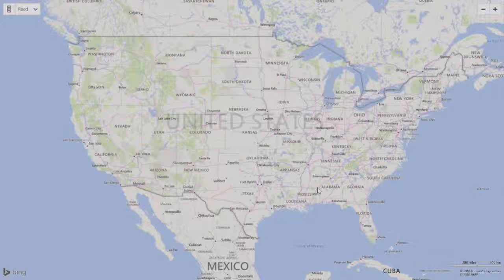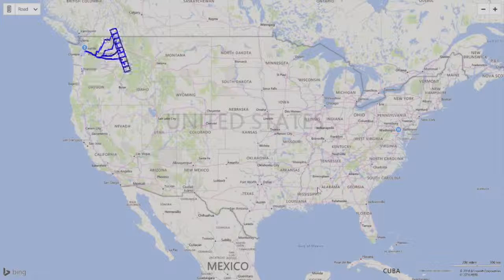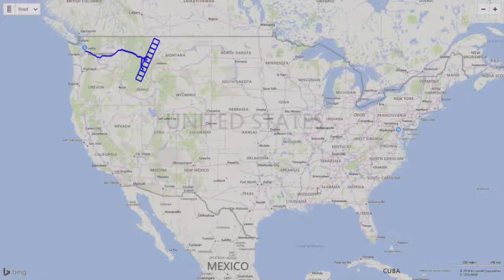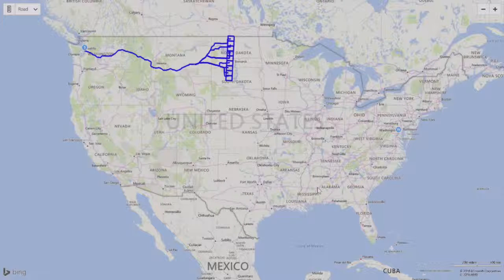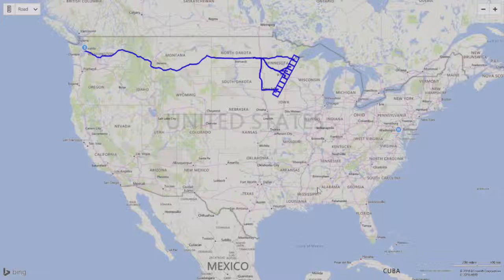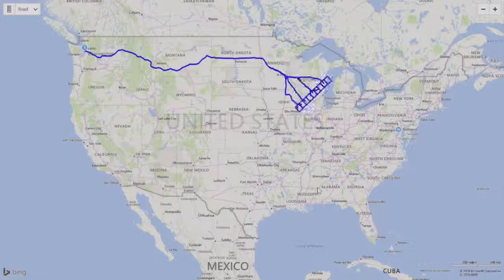Suppose we want to drive from Seattle to Washington DC. The algorithm that computes driving directions operates in stages. At each stage, we find the best driving directions from Seattle to all points in the frontier. This continues stage by stage until we compute our final direction from Seattle to Washington DC.